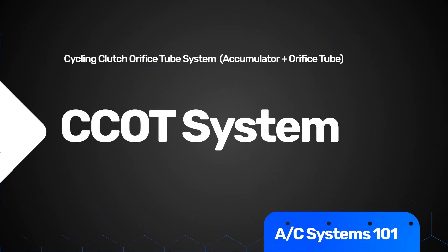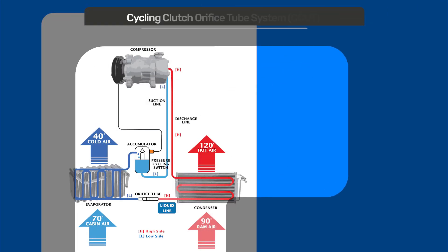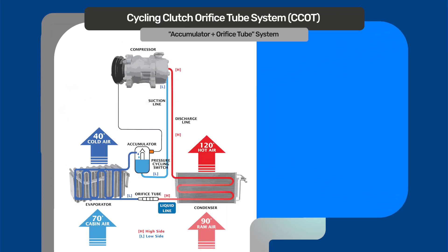So right now we're talking about the orifice tube accumulator system. This system is also known as a CCOT system — the cycling clutch orifice tube system. It's mostly found on GMs, Fords, Chryslers, all the way from the early 90s up to present.